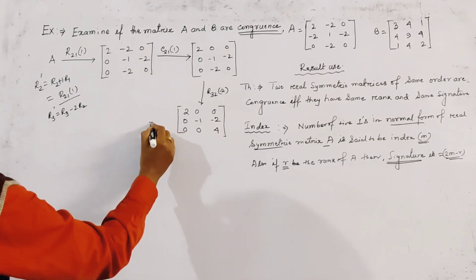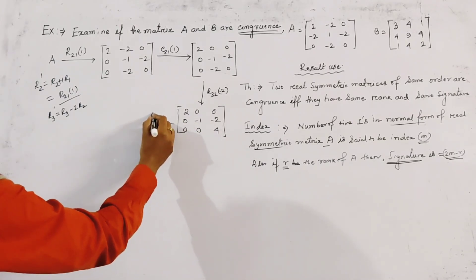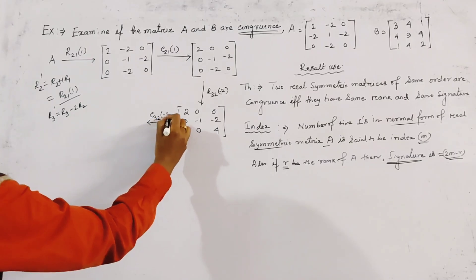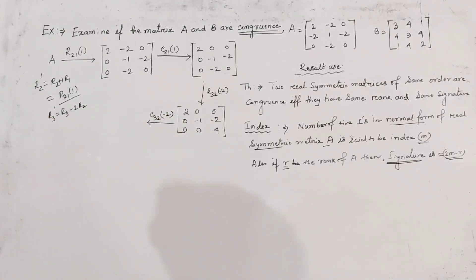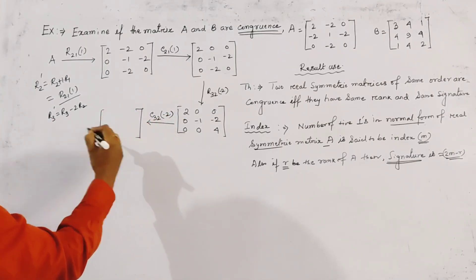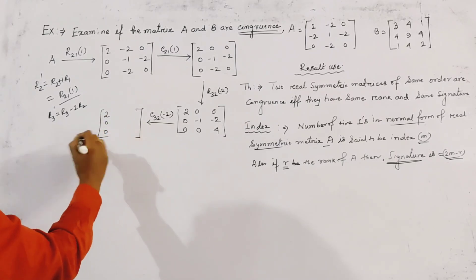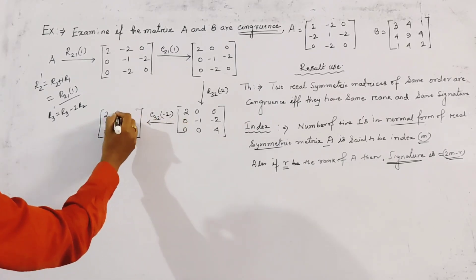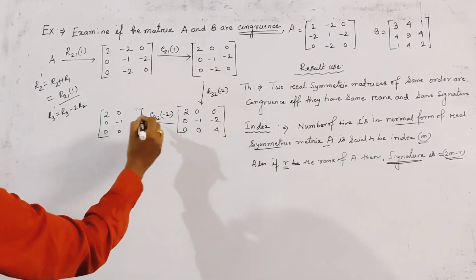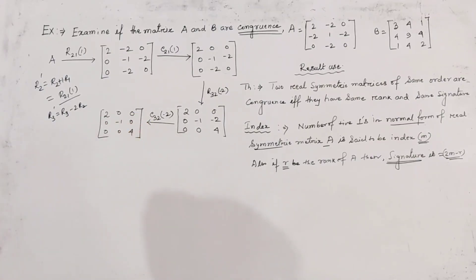Now we apply the column operation C3(2, -2). In a similar manner, we get the matrix as [2, 0, 0], [0, -1, 0], [0, 0, 4]. We then interchange the second and third rows with operation R23, giving [2, 0, 0], [0, 0, 4], [0, -1, 0]. Then column interchange C23 gives [2, 0, 0], [0, 4, 0], [0, 0, -1].